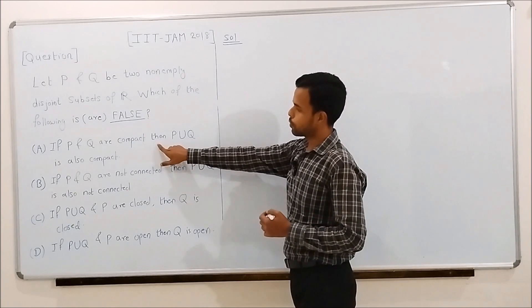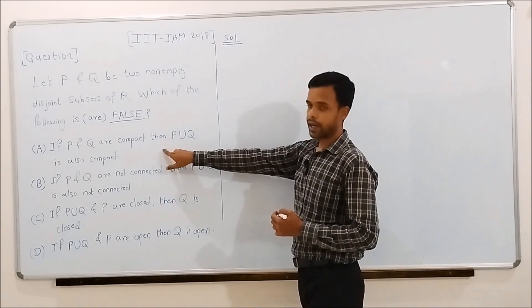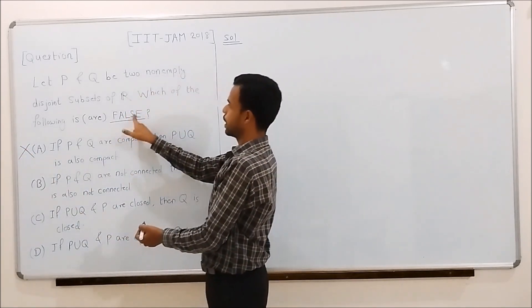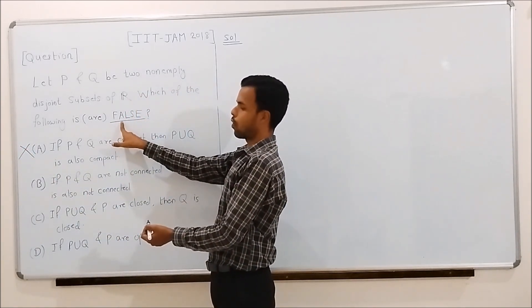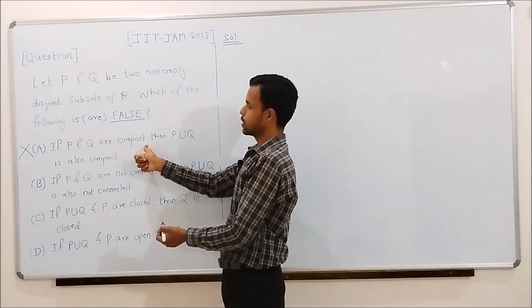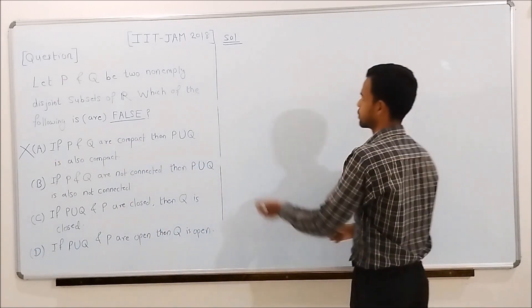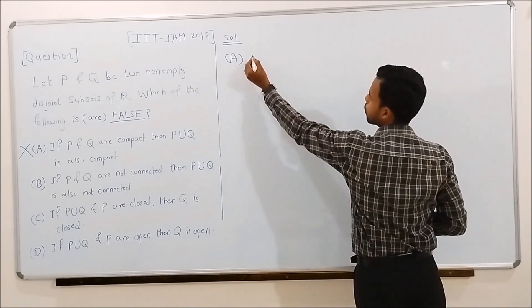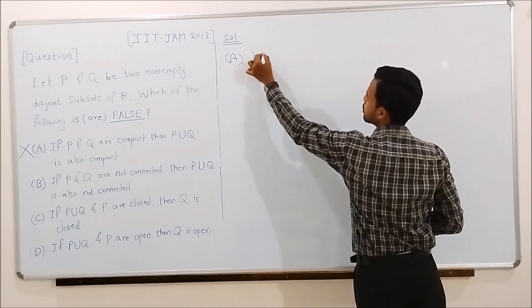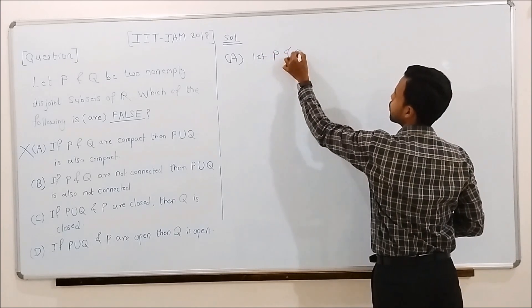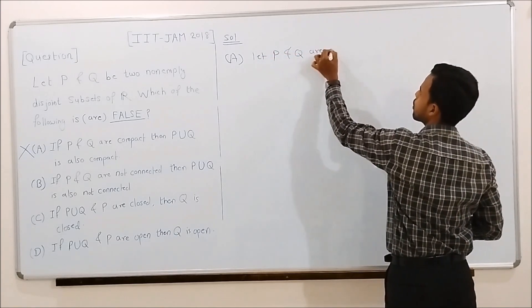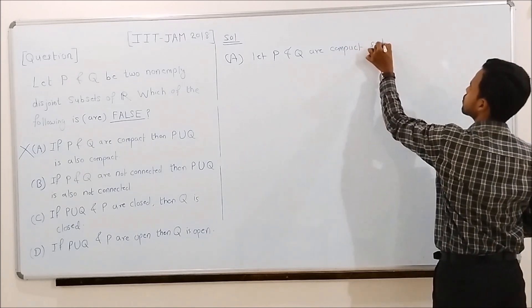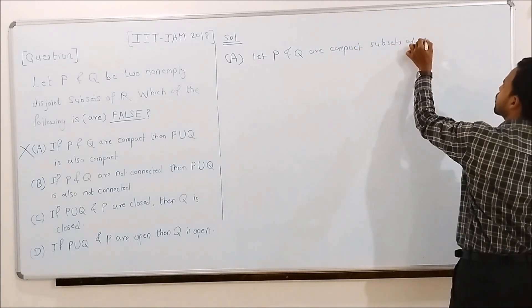We will show that option A is a true statement, so we do not have to select it, because we have to select only the options which are false. We will show that this is a true statement. What is given? Let P and Q be compact subsets of R.